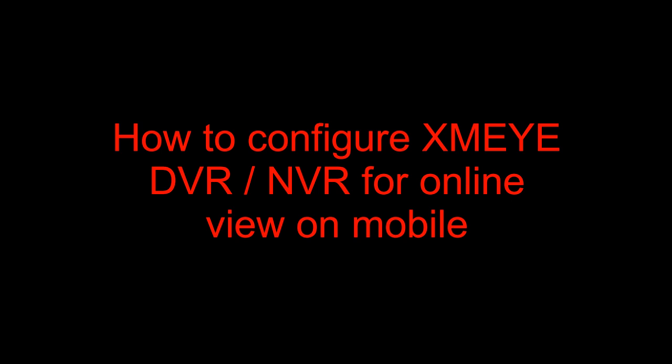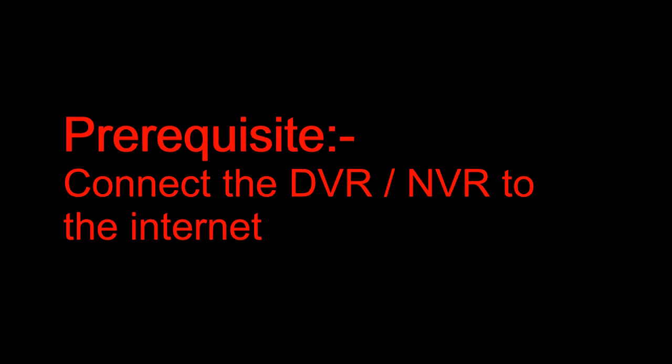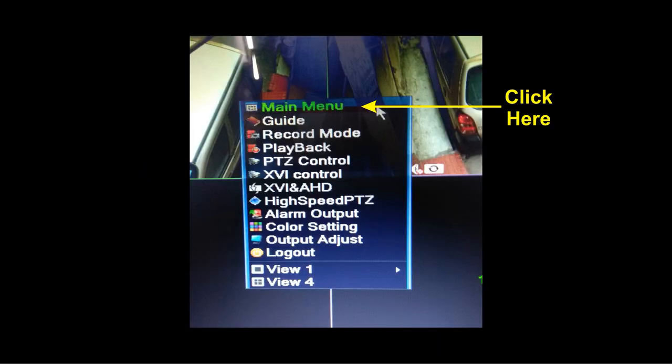The topic of the day is how to configure an XMI device for online view on mobile. To configure it, the very first requirement is to connect the device to the internet, and then go to the device screen.